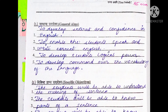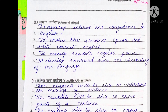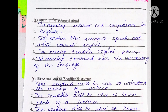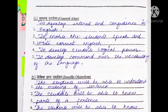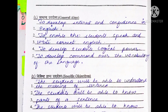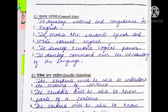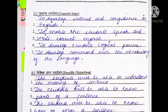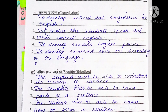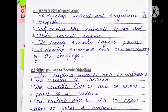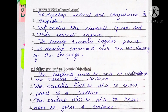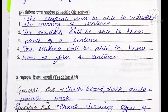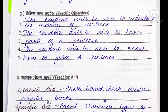The specific objectives are: after reading this chapter, the student will be able to understand the meaning of sentences, the student will be able to know the parts of sentences, and the students will know how to form a sentence.